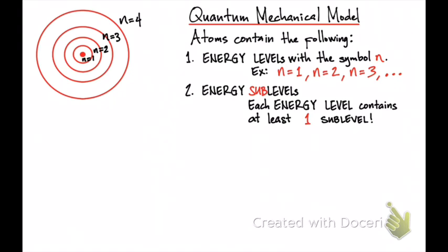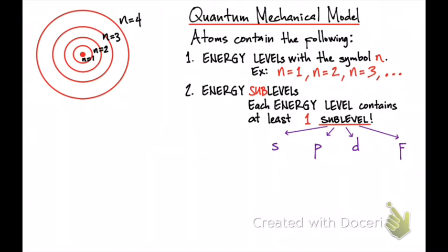These sublevels have names. You have an S sublevel, a P sublevel, a D sublevel, and an F sublevel. Besides energy levels and sublevels, atoms also contain orbitals. Orbitals reside within the sublevels. By definition, orbitals are regions of space within an atom where electrons can be found. This means that electrons cannot exist outside an orbital. Each sublevel contains at least one orbital.